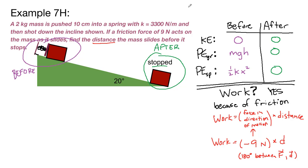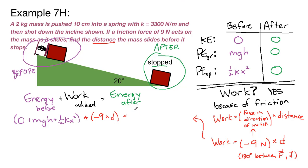So we have our standard setup. Energy before plus work added equals energy after. The energy before column has 0 plus MGH plus one half KX squared. The work added term was a yes, so we will put in negative 9 times D. And then the energy after column is 0 plus 0 plus 0.